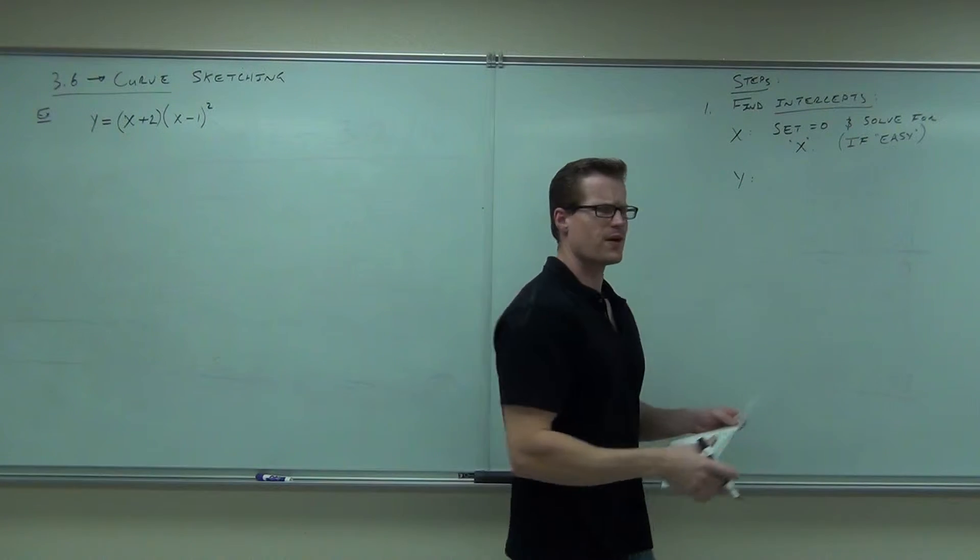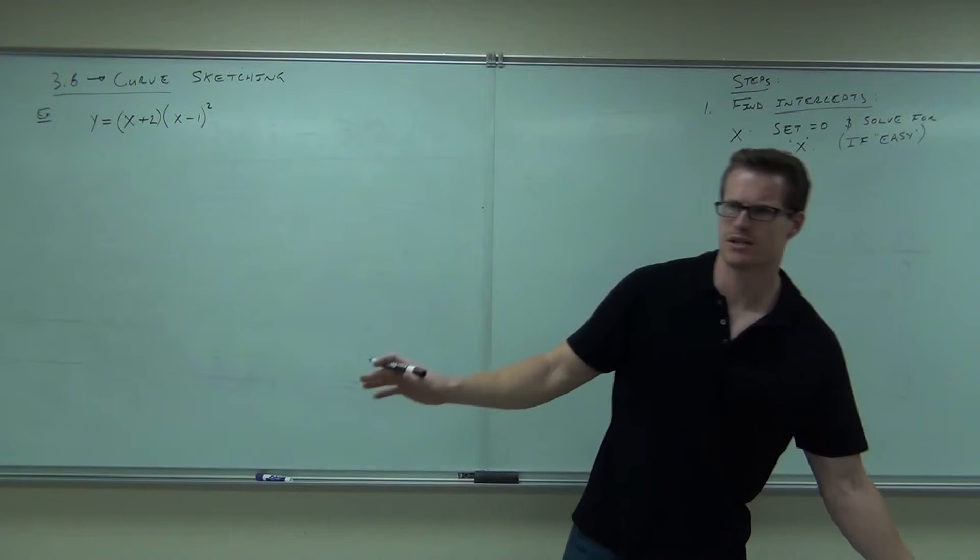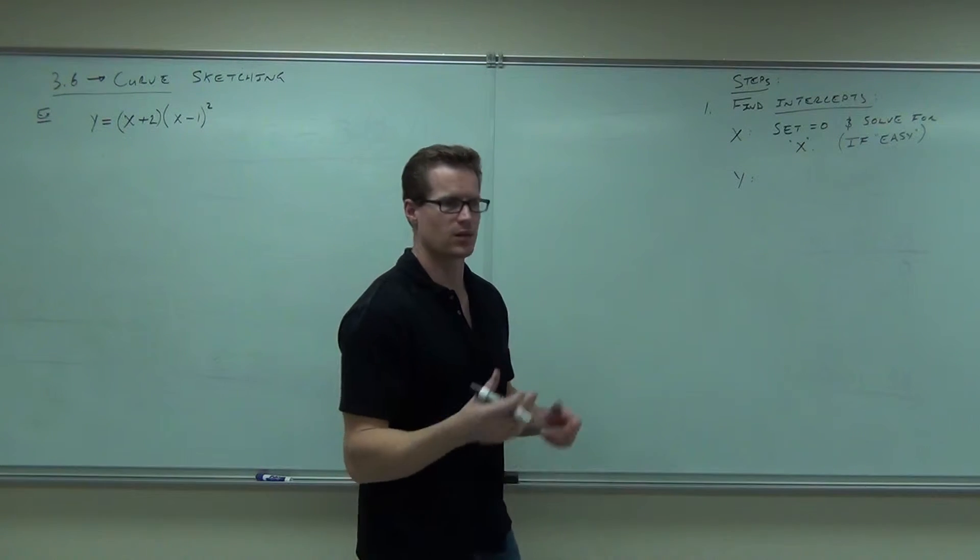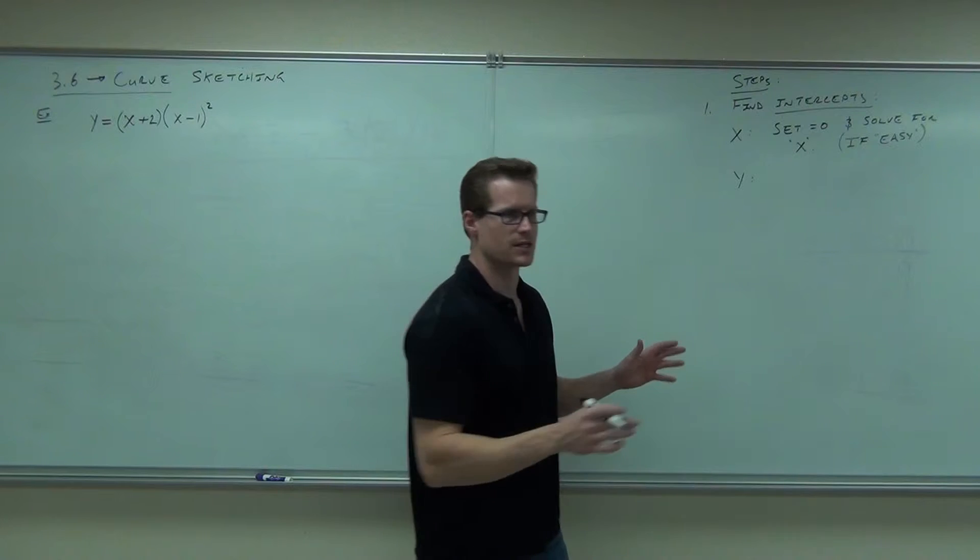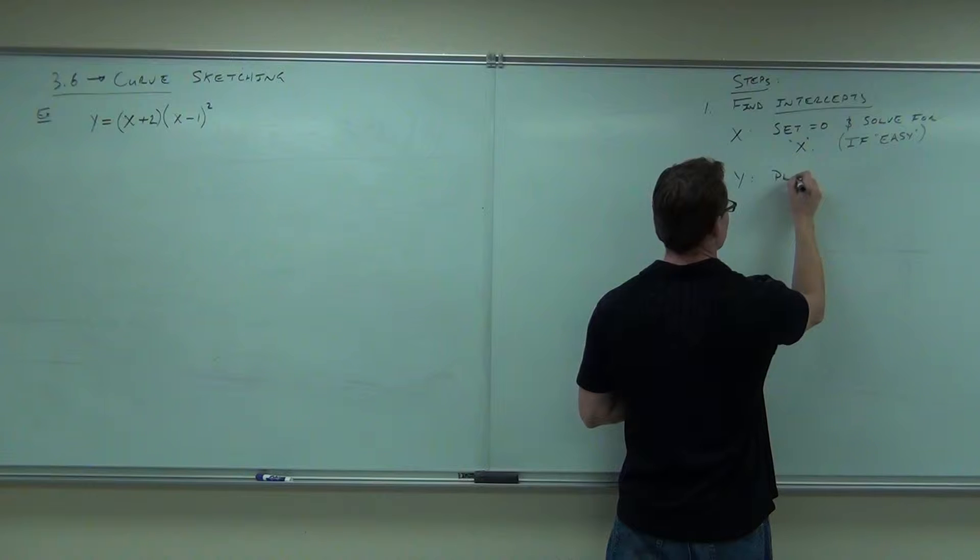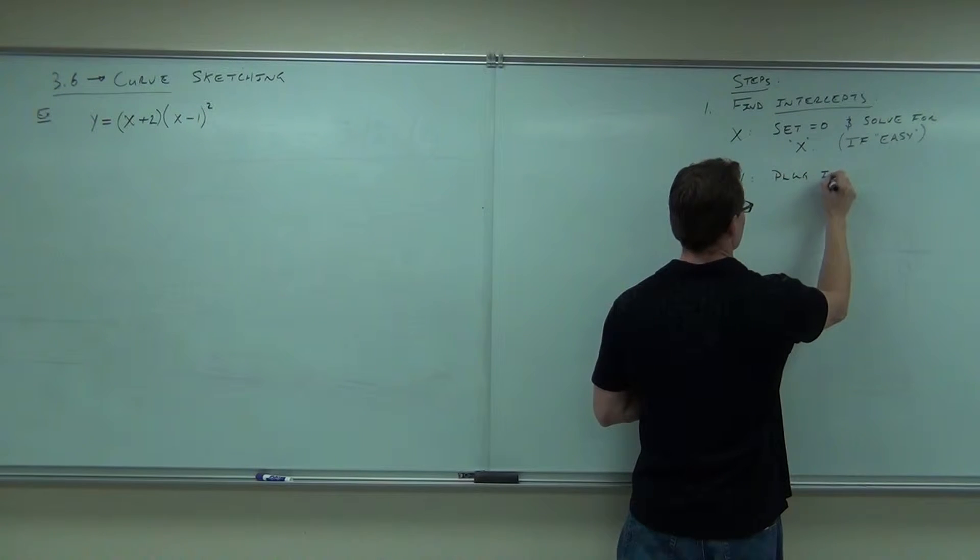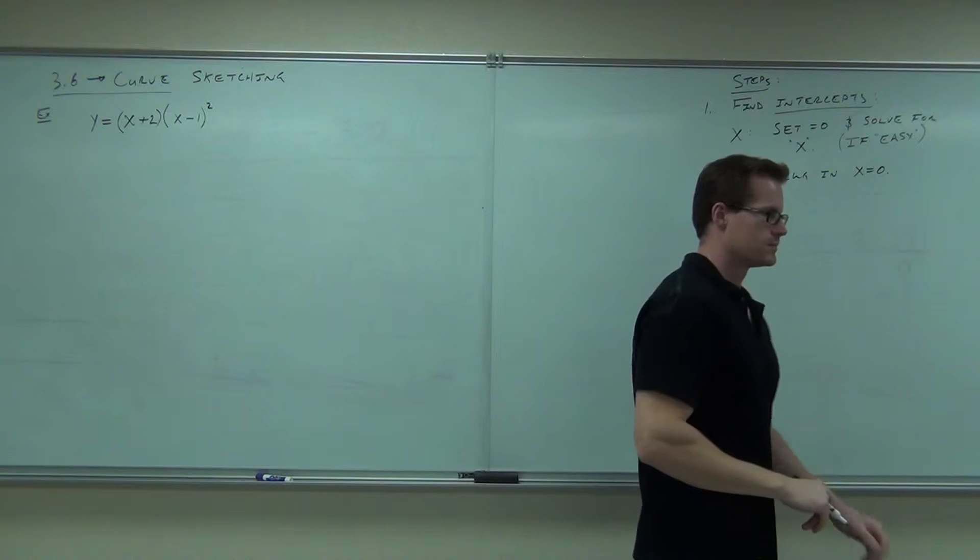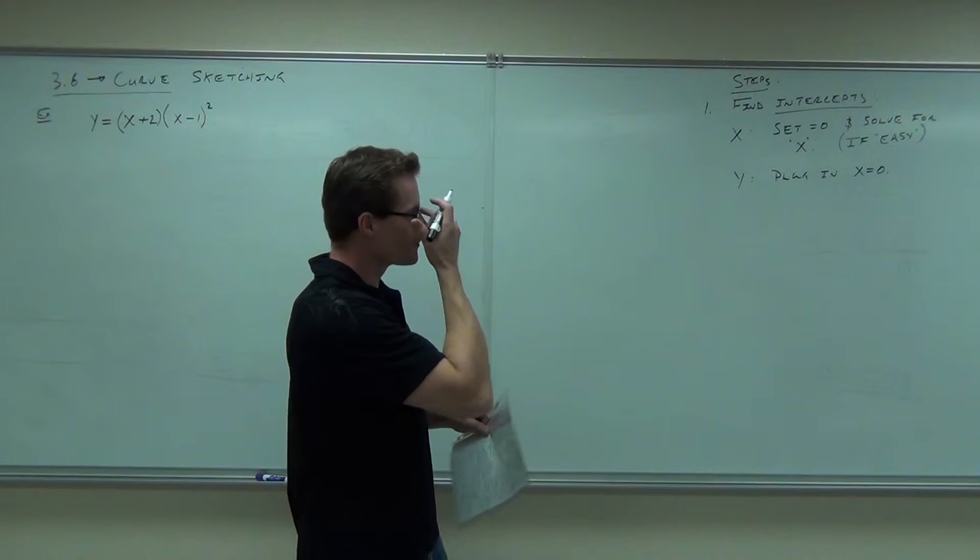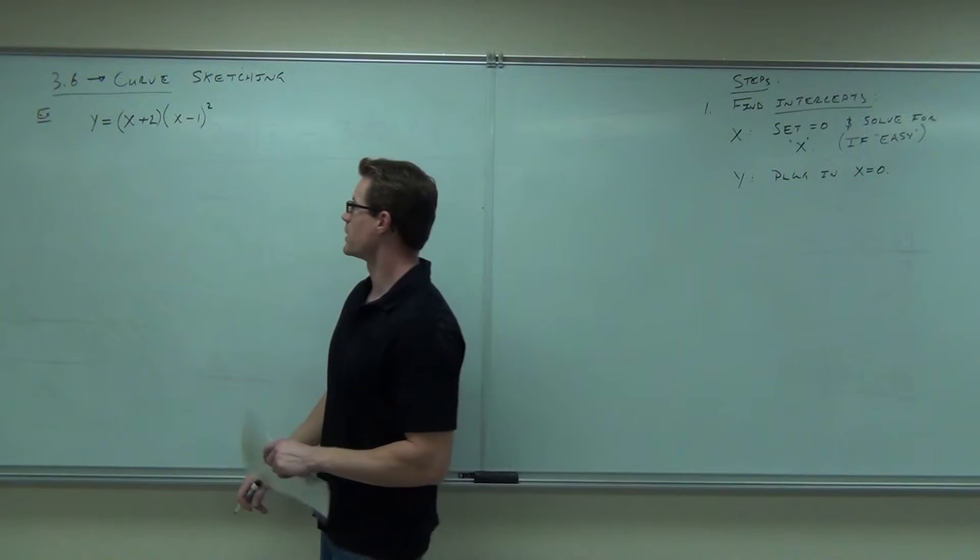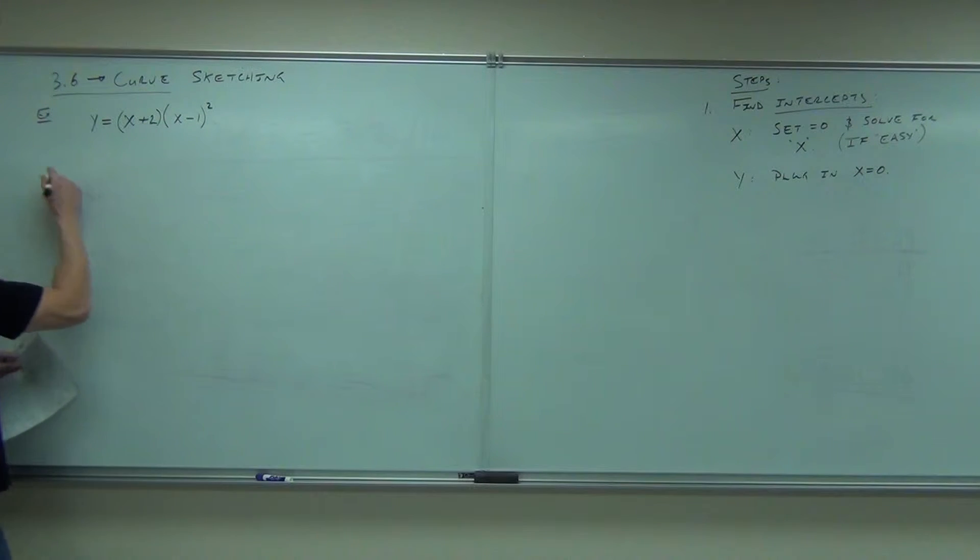For Y-intercepts, how do you find Y-intercept? Easy, really easy to do. X equal to zero. Set X, plug in zero. You plug in zero for X, and it'll give you Y-intercept. That's the easy one. You need to find that for every single one of these, if they exist. Let's try it. So this will be step number one.